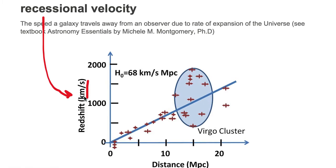The recessional velocity is the speed a galaxy travels away from an observer due to the expansion of the universe. So the expansion of the universe is plotted on the horizontal axis with distance increasing to the right.